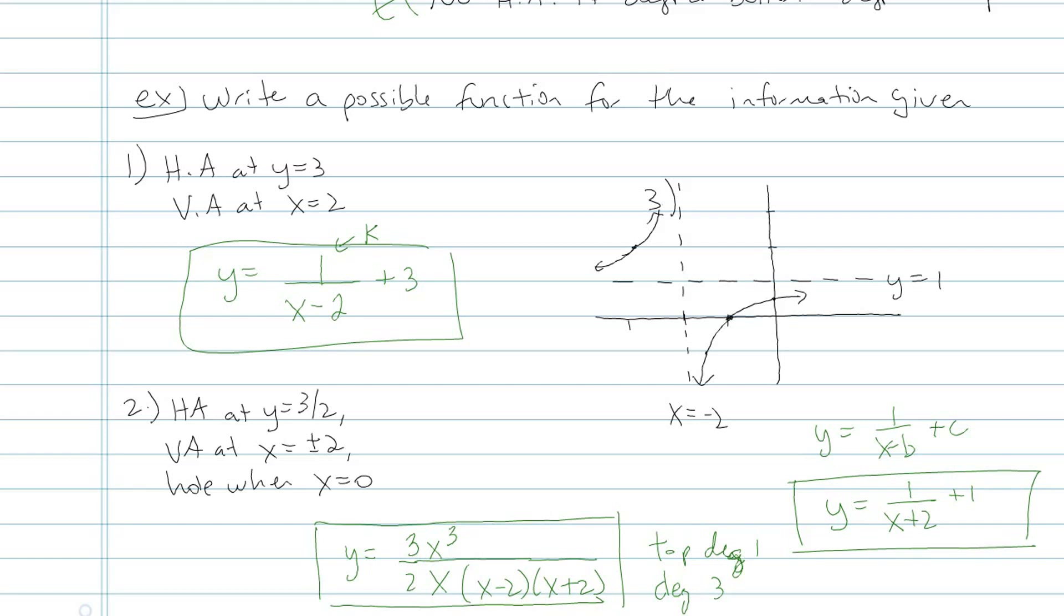There it is. So graphing rational functions, there's lots of stuff to wrap your head around with different forms, the holes, the asymptotes. You get better with practice. This pencast, if you want to come back to it, reviews how to write the equation if you're given key features.